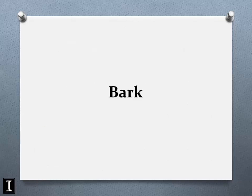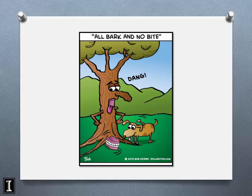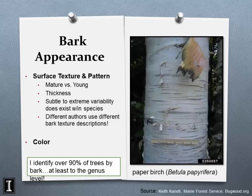Over 90% of the trees I identify, I identify by bark alone. Some species are difficult to identify by bark, especially when comparing juvenile, middle-aged, and mature trees, because bark morphology changes as the tree matures and ages. Bark can also change based on a tree's growth rate — there's a lot to account for.